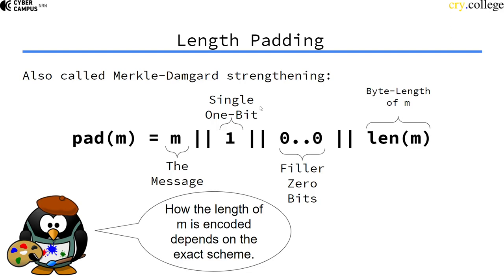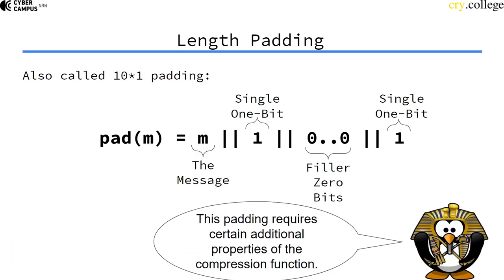How the length of M is exactly coded — whether it is 32 bits or 64 bits — depends on the exact scheme using this padding. Another padding scheme is the 10* padding, where you just omit the length.